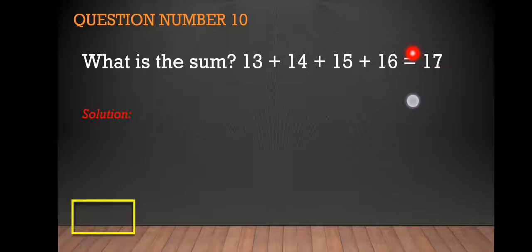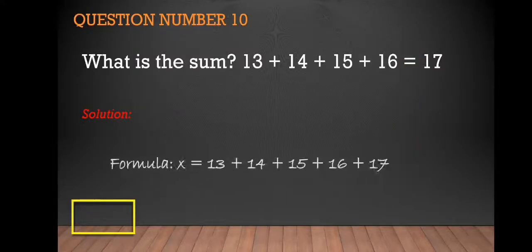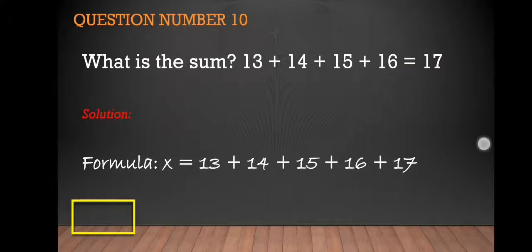We had some error in this problem. Instead of equal, this is a plus sign. Okay, so the formula is simply we're going to add that horizontally. The technique here to add this faster is to provide pairings.